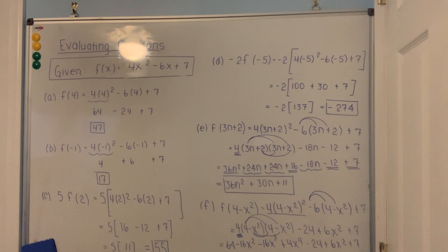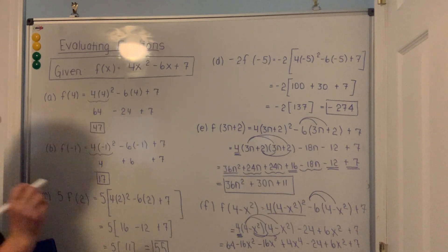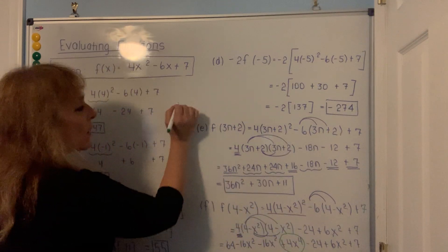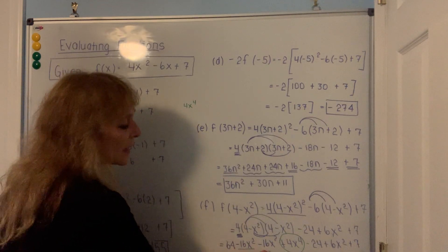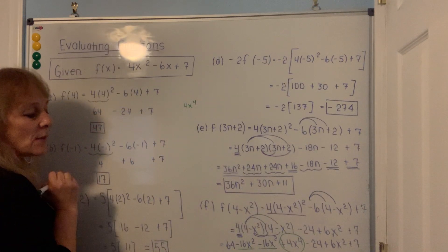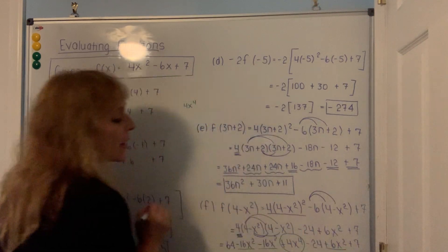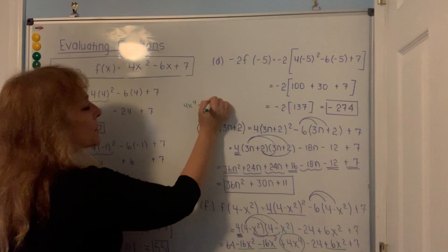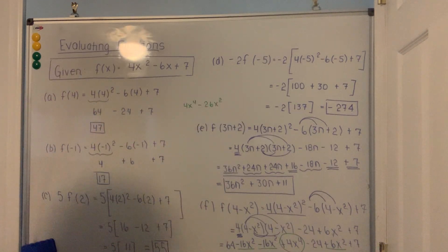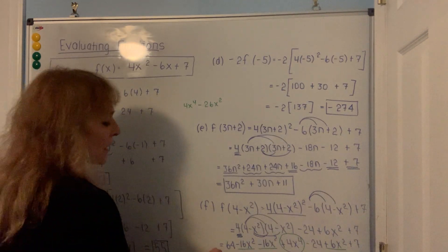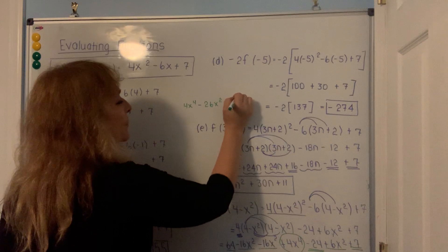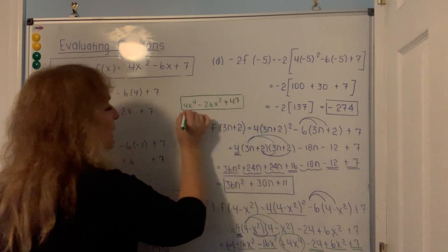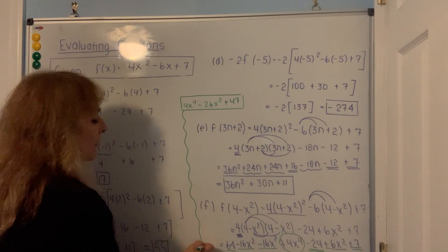For the final step I'll write the answer in a different color. Starting with the highest degree: 4x to the 4th. There are no x cubed terms. For x squared: negative 16 minus 16 is negative 32, plus positive 6 gives negative 26x squared. For the constants: 64 minus 24 is 40, plus 7 is 47. The final answer for part f is 4x to the 4th minus 26x squared plus 47.